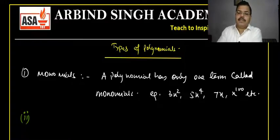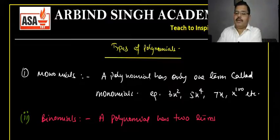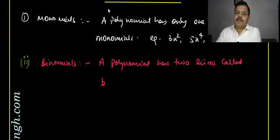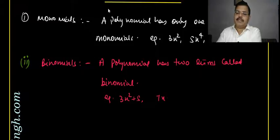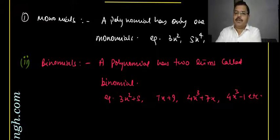The next type is binomials. A polynomial having two terms is called a binomial. For example: 3x² + 5, 7x + 9, 4x³ + 7x, and 4x³ − 1. Whatever the degree, if the number of terms is exactly two, it is a binomial.